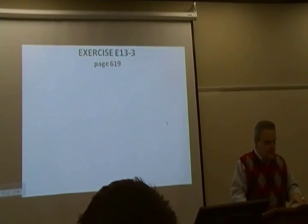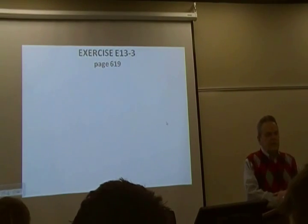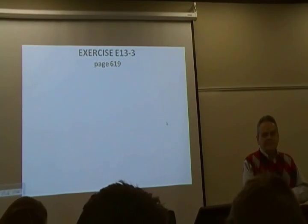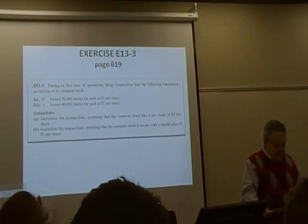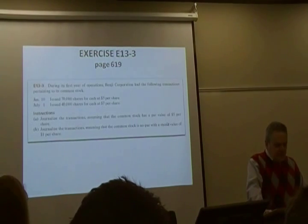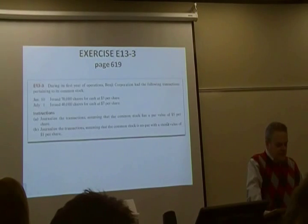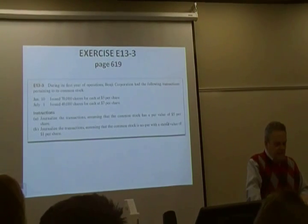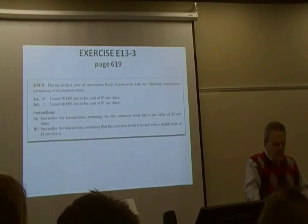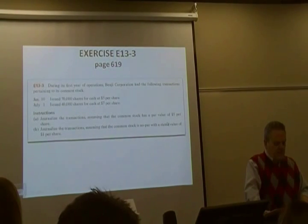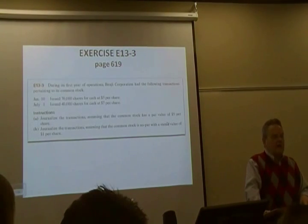Turn with me to exercise 13.3, on page 6.19 in your book. The exercise says, during its first year of operations, our corporation had the following transactions pertaining to common stock. Journalize the transactions, assuming the common stock has a par of five dollars per share. January 10th: issued 70,000 shares for cash at five dollars per share.